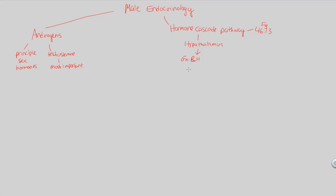When we see 'releasing,' this means we want something to happen — the opposite of inhibiting. GnRH is gonadotropic, meaning it's going to have an effect at a different organ — the gonads. The brain hypothalamus releases GnRH, which enters the pituitary portal vein, a blood highway that hormones travel along toward the anterior pituitary. Once GnRH reaches the anterior pituitary, the anterior pituitary will produce and secrete two separate gonadotropins in response.